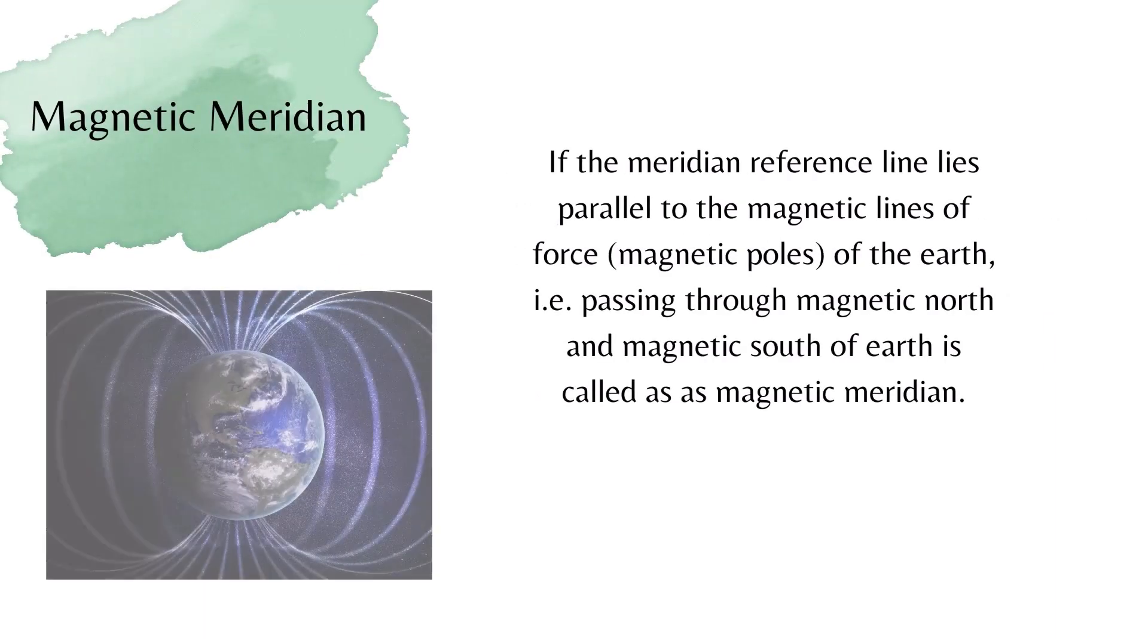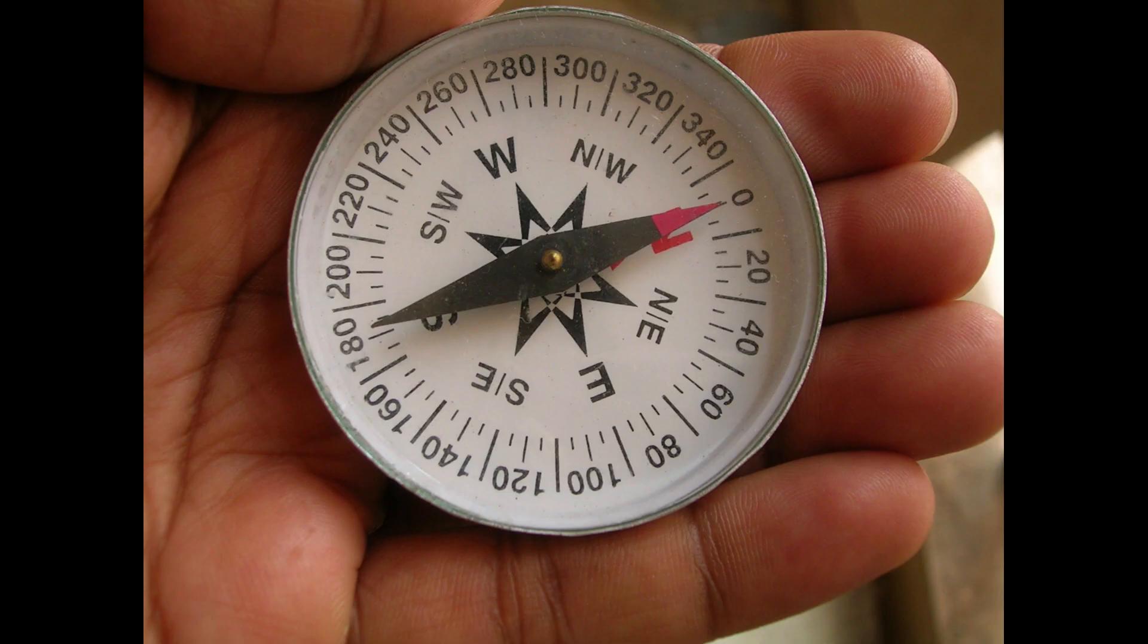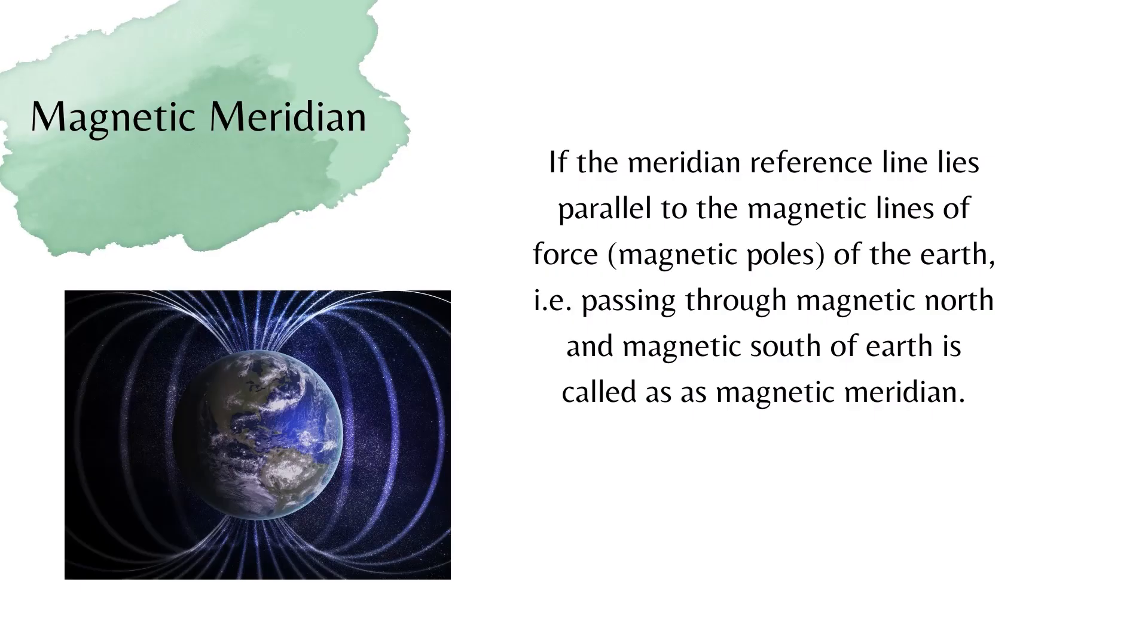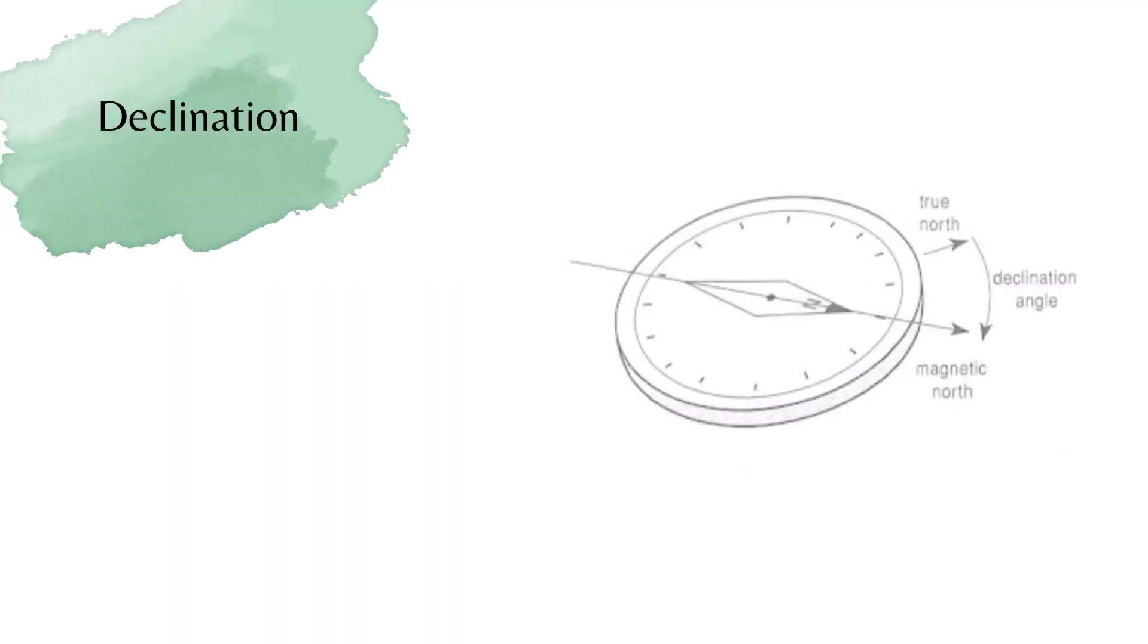Magnetic meridian is a reference line parallel to the magnetic lines of force of earth, passing through the magnetic north and magnetic south of the earth. A magnetic meridian can be identified using a freely suspended magnetic needle that is influenced by the earth's magnetic field. Now coming back to declination.